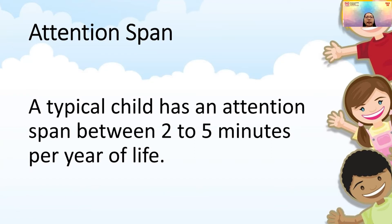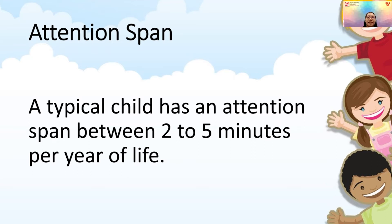Let's talk about attention span. Scientific studies tell us that a typical child has an attention span of between two to five minutes per year of life. So if my child is nine years old, I will expect nine times two — so about 18 minutes — to five times nine — to 45 minutes. That's a very big span, but it tells you what is the typical attention span expected of your child. Take the age, multiply it by two and then by five — that is the range for your child's attention span.